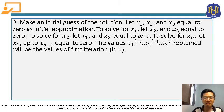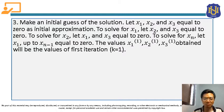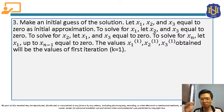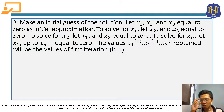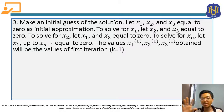Step 3: make an initial guess of the solution — let x1, x2, and x3 equal zero as the initial approximation. To solve for x1, let x2 and x3 equal zero. To solve for x2, let x1 and x3 equal zero. To solve for xn, let x1 through xn−1 equal zero. The values x1⁽¹⁾, x2⁽¹⁾, x3⁽¹⁾ obtained will be the values of the first iteration.